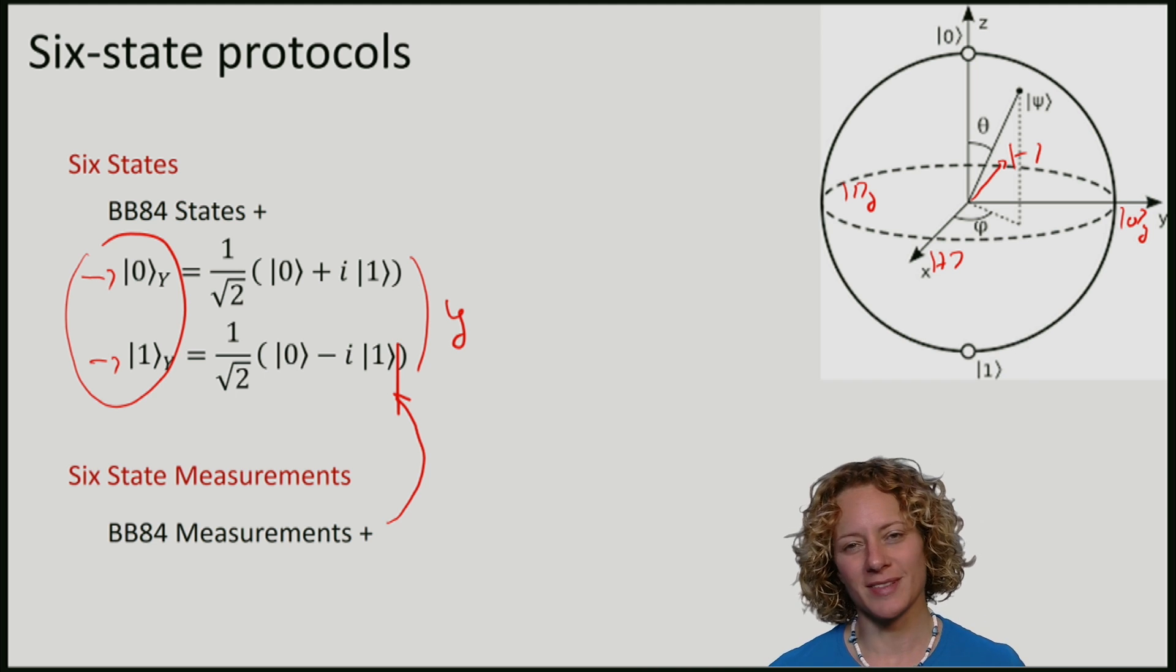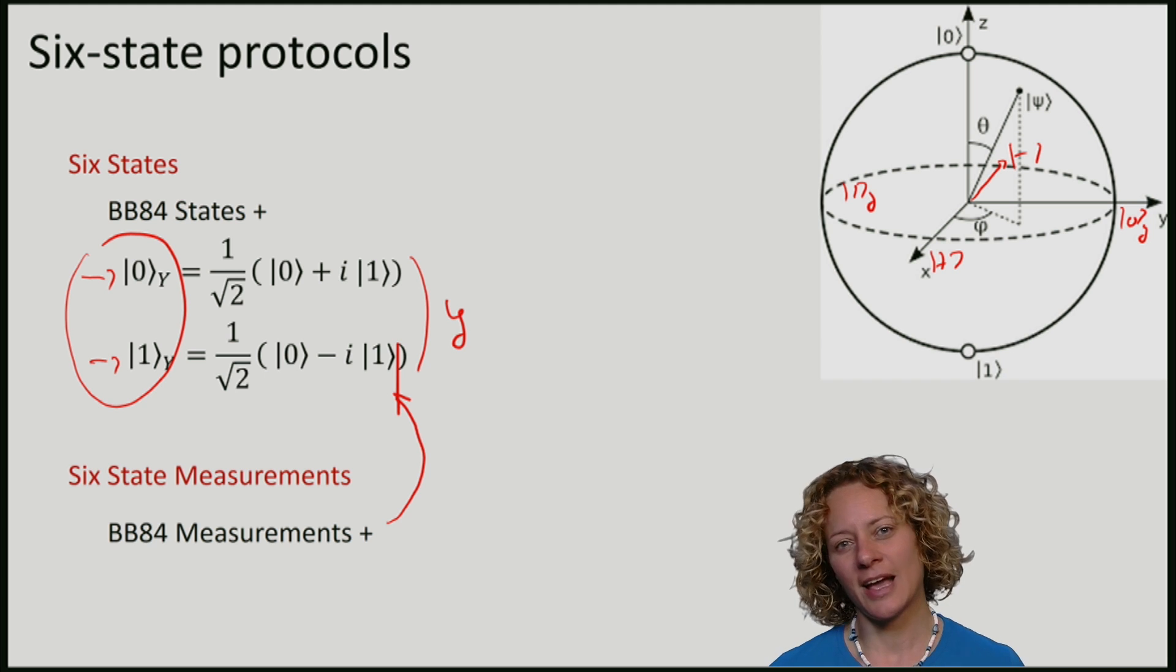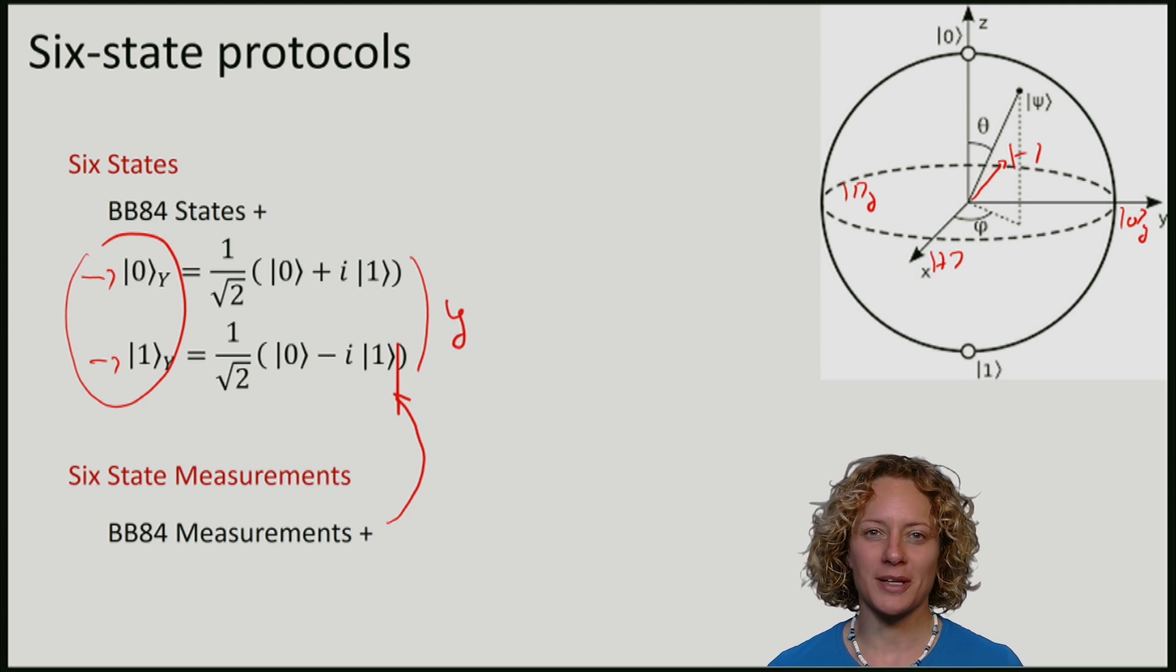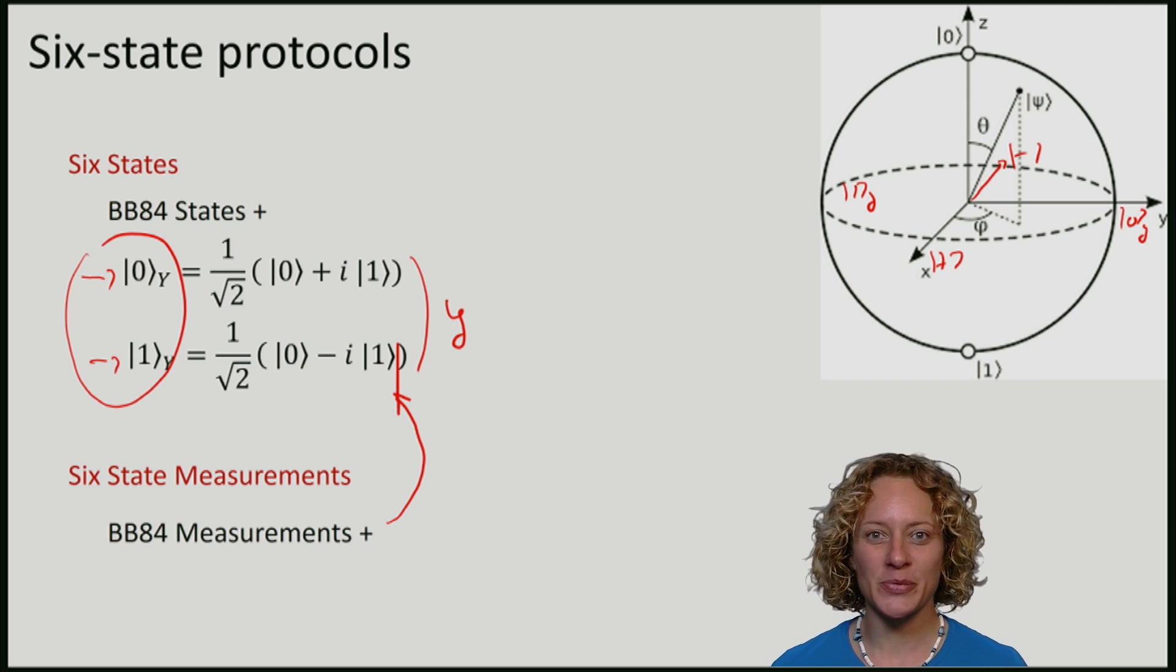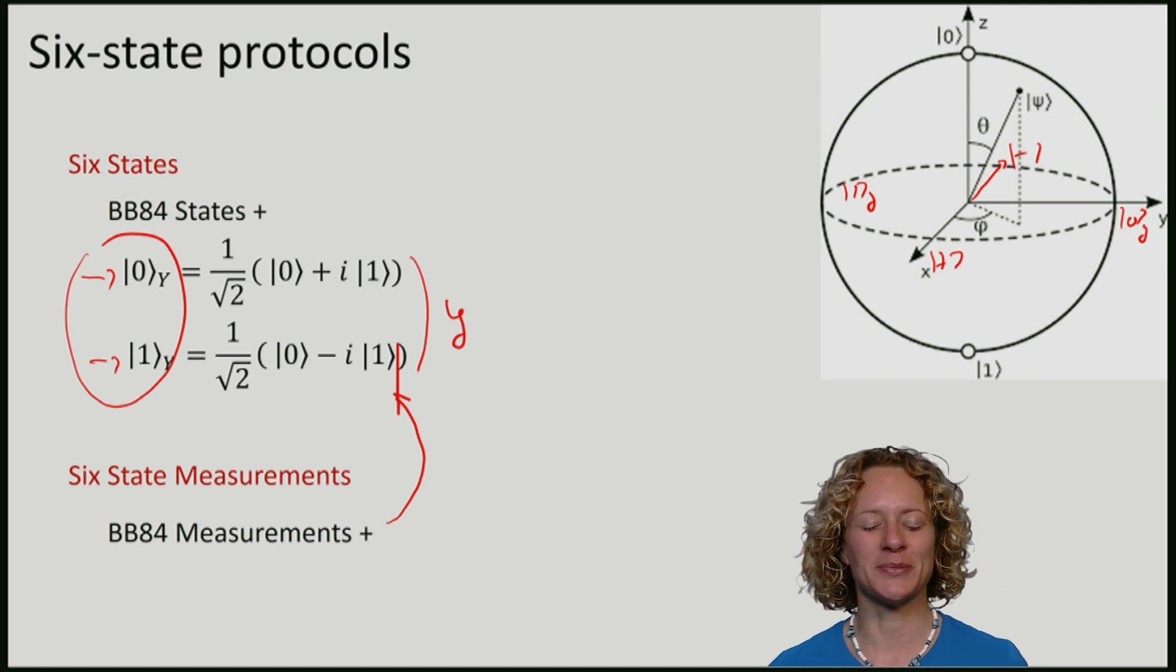The BB84 states and six states are very useful for constructing quantum protocols. We will use them for much more than just quantum key distribution.